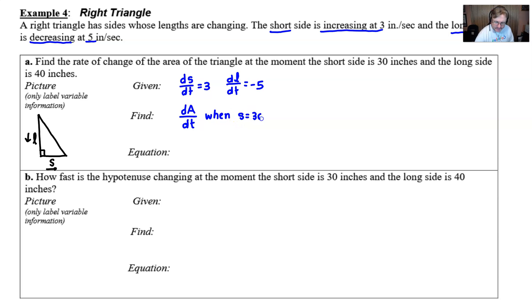And then the equation, you just kind of put everything together. Usually the equation is like a mixture of your picture and your find. In your picture you have this triangle, in the find you have this word area. Put those two together and you've got area of a triangle. The area of a triangle is one half the base times the height. In this particular case the base would be the S and the height would be the L, and with that information we are locked and loaded to ready and ready to take this derivative and solve it.